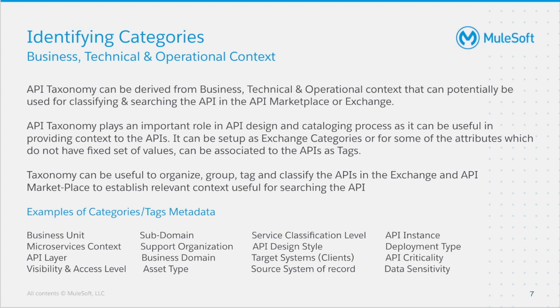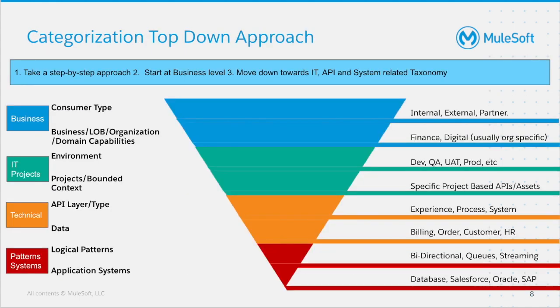Examples of categories include business unit, subdomain, asset type, API instance, and API design style. In order to make categorization easier, we use the top-down approach. The category top-down approach is split into four parts. At the very top we have business, then IT, then technical, then at the very bottom, pattern systems.